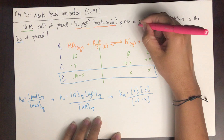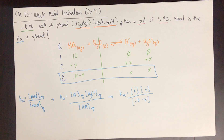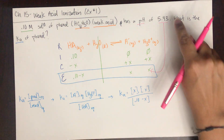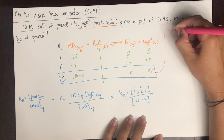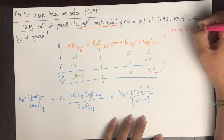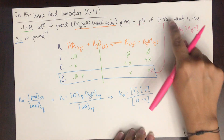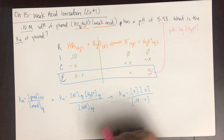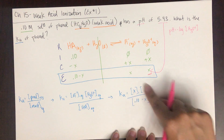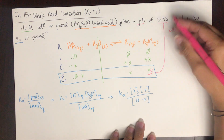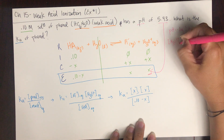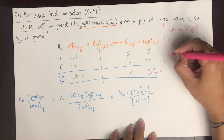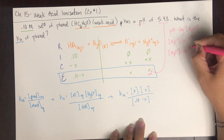This problem also gives us a pH of 5.43, which lets us determine x. Remember, pH is the negative log of the hydronium ion concentration at equilibrium. So I can use the pH to solve for hydronium ion concentration, which is also x. The hydronium ion concentration equals 10 to the negative pH, so: H₃O⁺ = 10 to the negative 5.43.